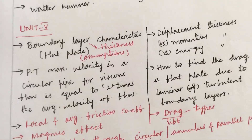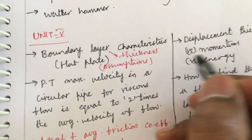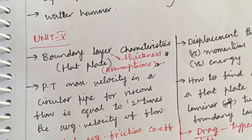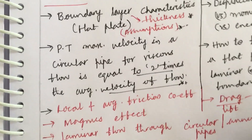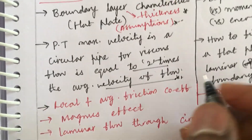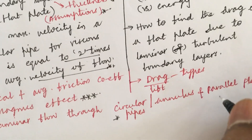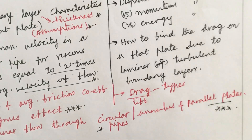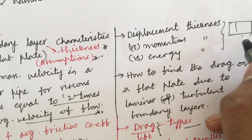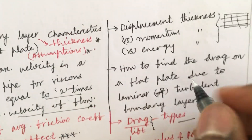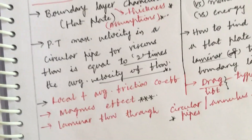Unit 5 is for students aiming for excellent marks. Boundary layer characteristics — thickness and assumptions for a flat plate. Prove that maximum velocity in a circular pipe for viscous flow equals two times the average velocity of flow. Local and average friction coefficients, Magnus effect (2-mark question), laminar flow through circular pipes, annulus, and parallel plates are topmost questions. Define drag and lift — their types and the differences between displacement thickness, momentum thickness, and energy thickness in tabular column point-wise format. How to find drag on a flat plate due to laminar and turbulent flow is a topmost question. Without Unit 3 concepts, you cannot proceed with Unit 5.